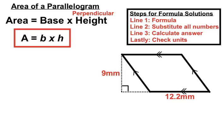So there's our formula. Area equals base times the perpendicular height. A equals B times H is our formula. Straight underneath we're going to put the numbers for this particular question in the right spots. B for base, 12.2 times H for height, 9.